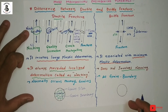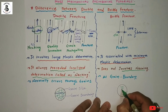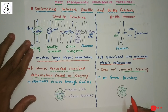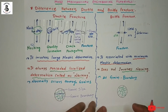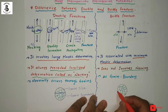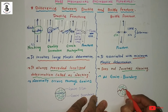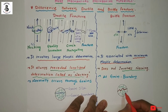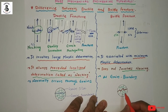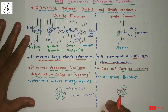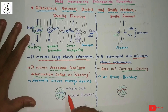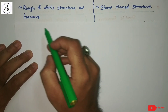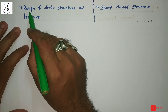For brittle fracture, failure always occurs at the grain boundaries. By the application of load, failure is observed at the grain boundaries — the material fails through the grain boundaries with little or no deformation. If the material fails through the grain itself, it has enough capacity to withstand the load and stress.